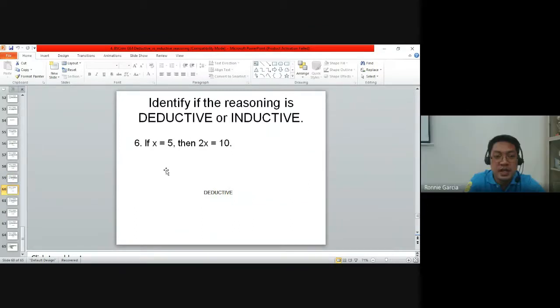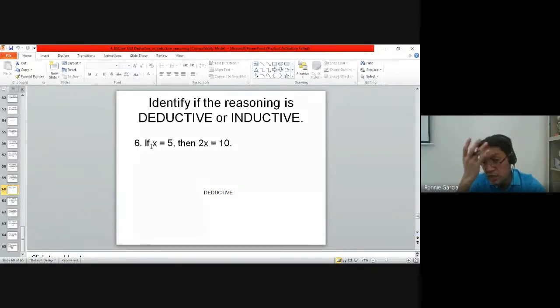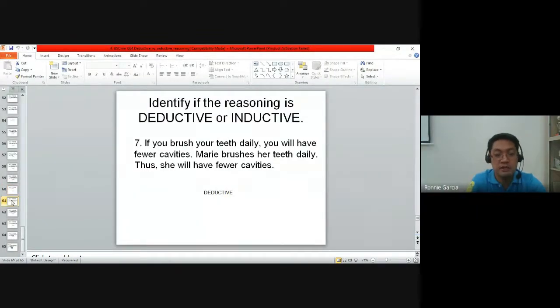Number six is deductive. Even though you don't see the word 'all,' it gives a rule that the value of x is five. X is equal to five is already the general statement. That's why if you make it 2x, it becomes 2 times x or 2 times 5, which equals 10. If you see statements starting with 'if x equals,' 'if y is equal to,' 'if a is equal to,' then it's deductive.